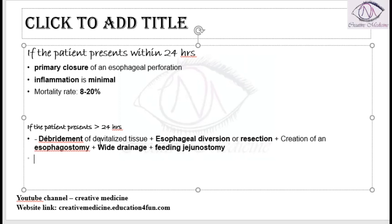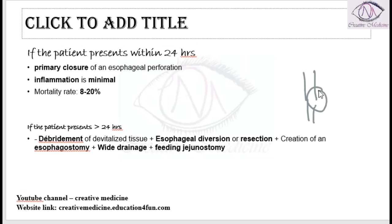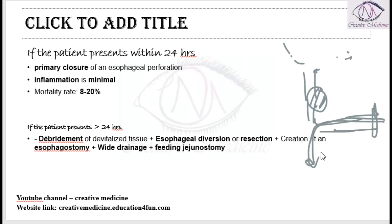If there is a tear, you should debride all the devitalized tissue, then divert it — divert this side below — and create an esophagostomy. Actually, for feeding you will do a feeding jejunostomy, and the esophagostomy is mainly for drainage of secretions.